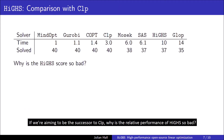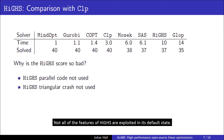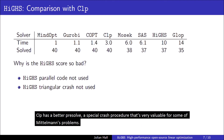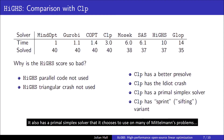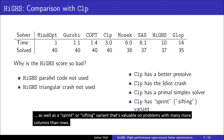If we're aiming to be the successor to CLP, why is the relative performance of HISE so bad? Not all of the features of HISE are exploited in its default state. Also, CLP has a better pre-solve, a special crash that's very valuable for some of Mittelmann's problems, a primal simplex solver that it chooses to use on many of Mittelmann's problems, as well as a sprint or sifting variant that's valuable on problems with many more columns than rows.